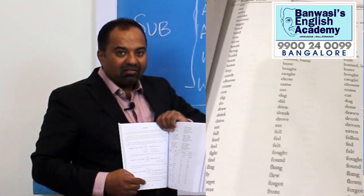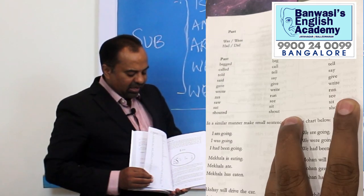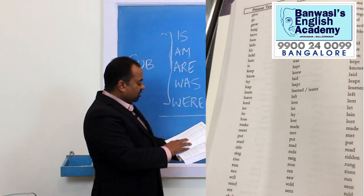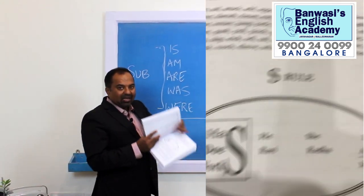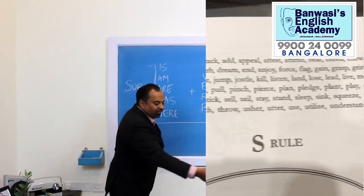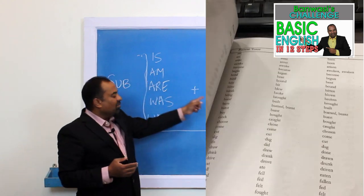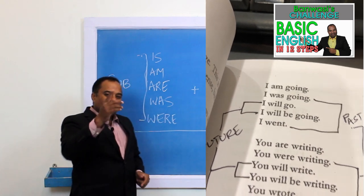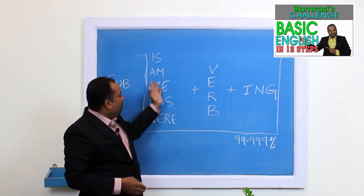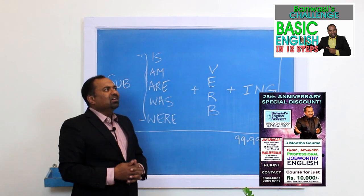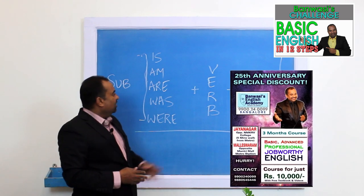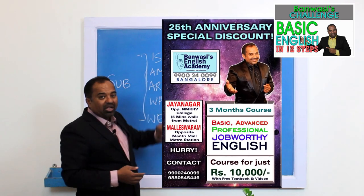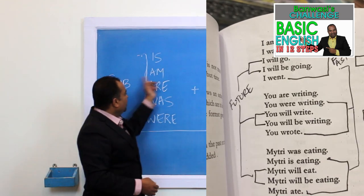On page 90, you'll understand how to use these verbs. I've given you the format: IS, AM, ARE, WAS, WERE, then WILL BE, SHALL BE. If you have one rupee, you can make five rupees with it. If it takes effort, practice well.